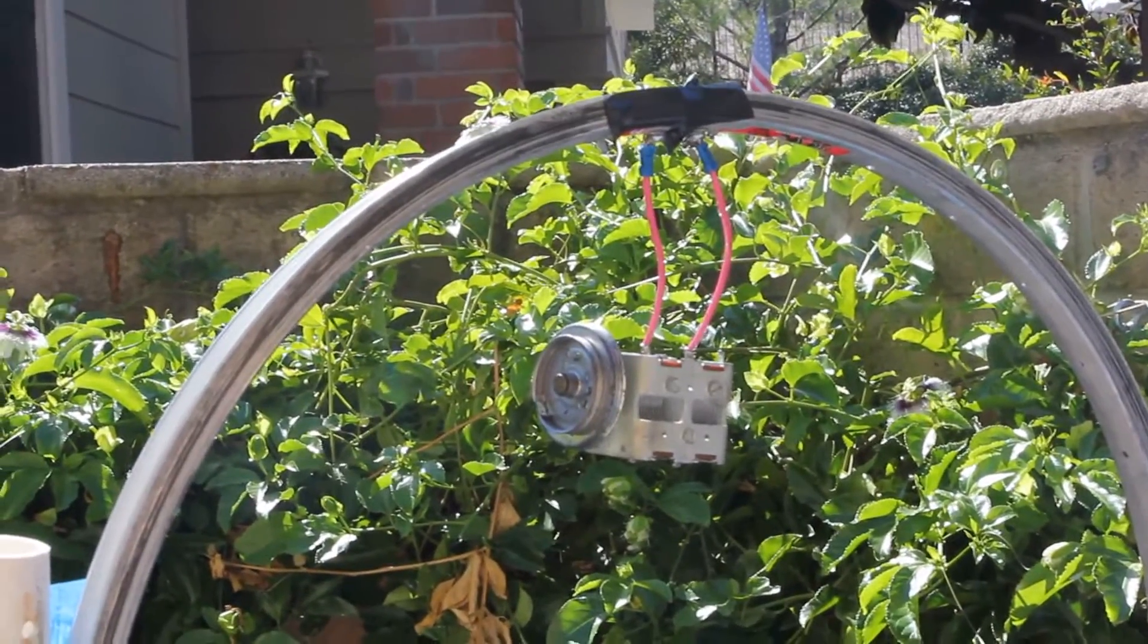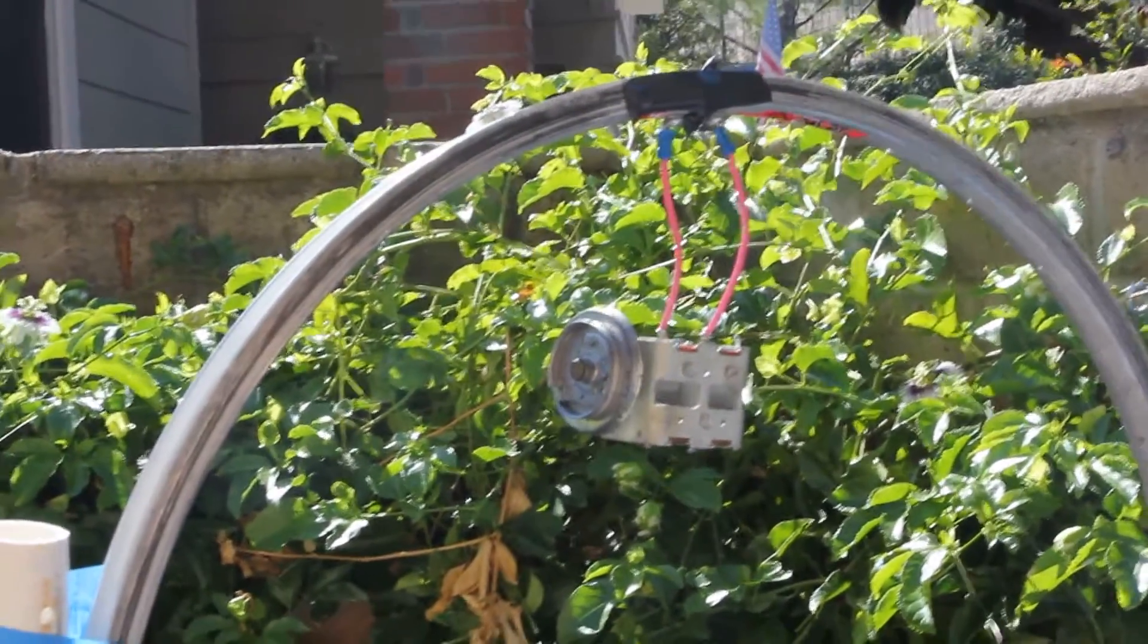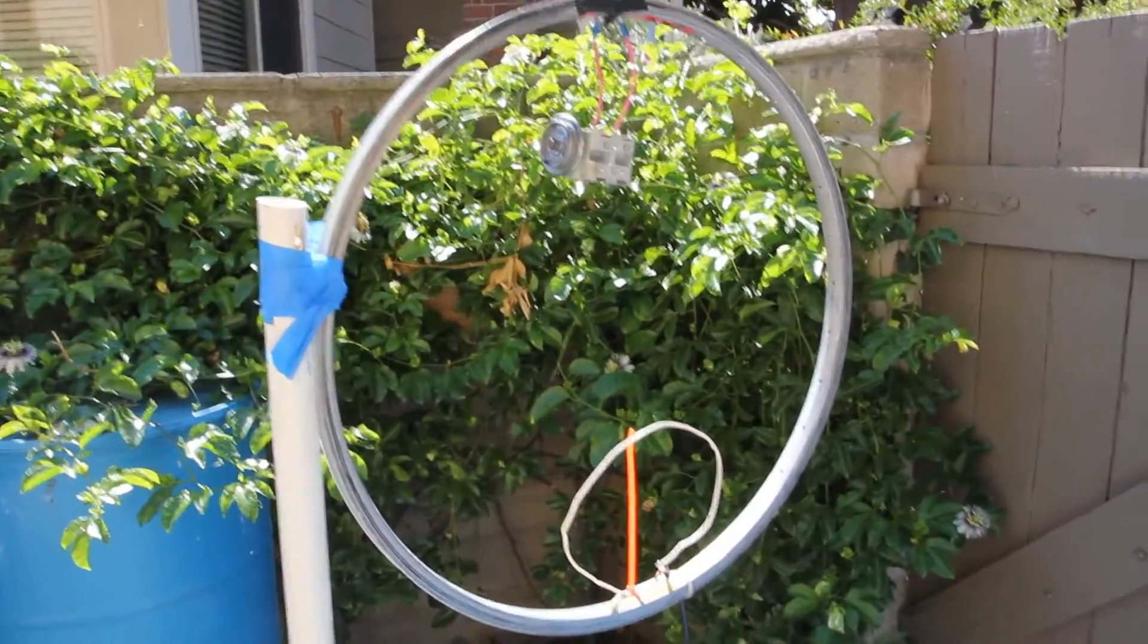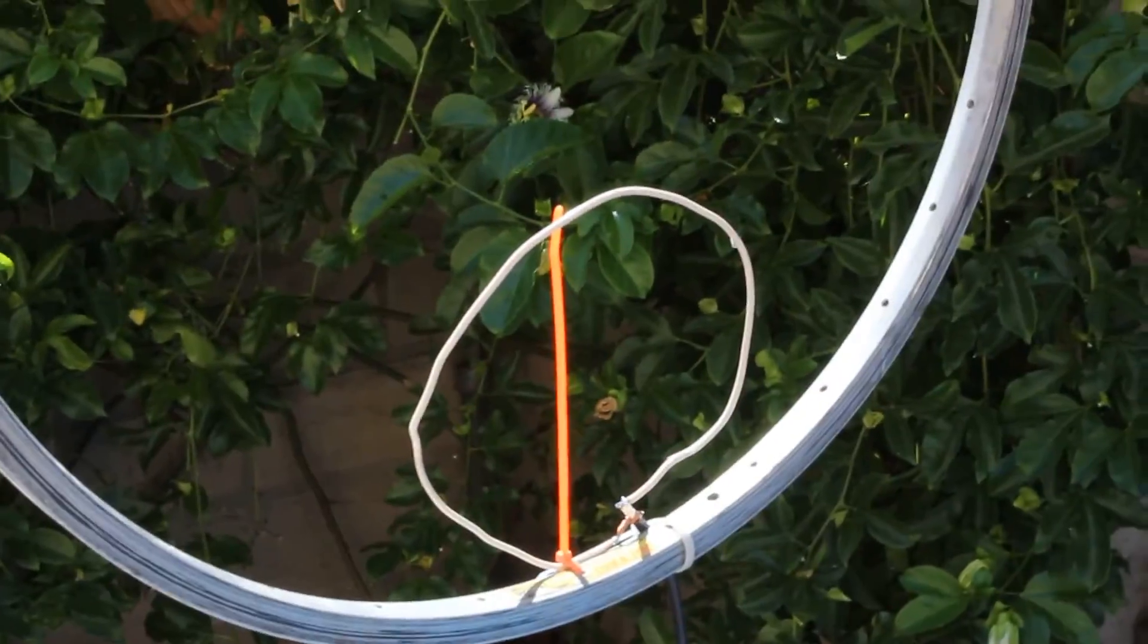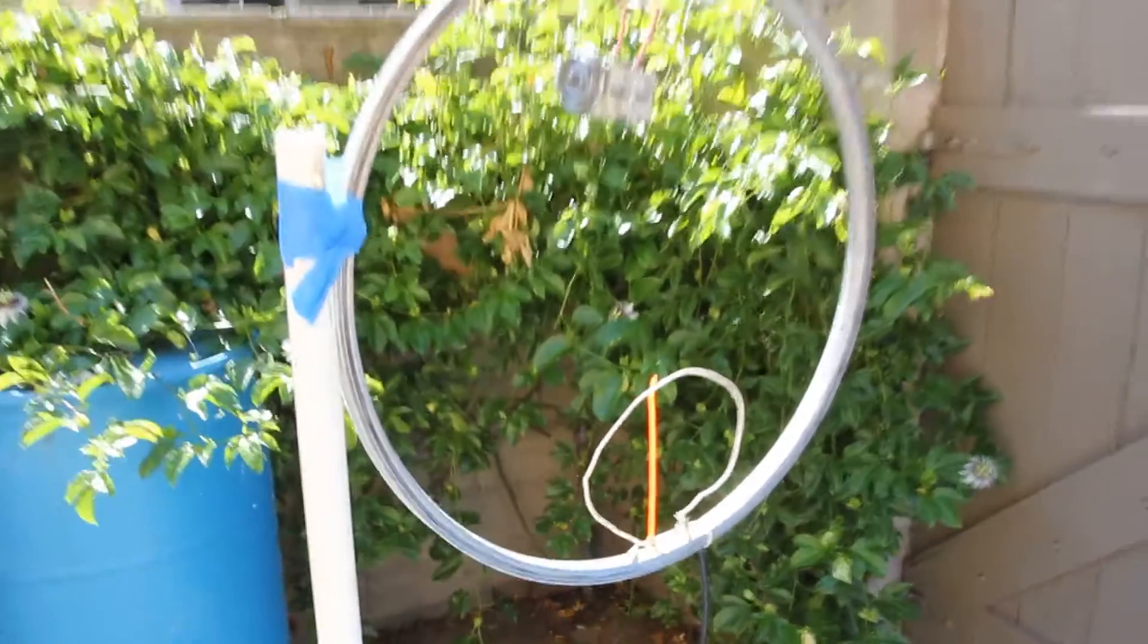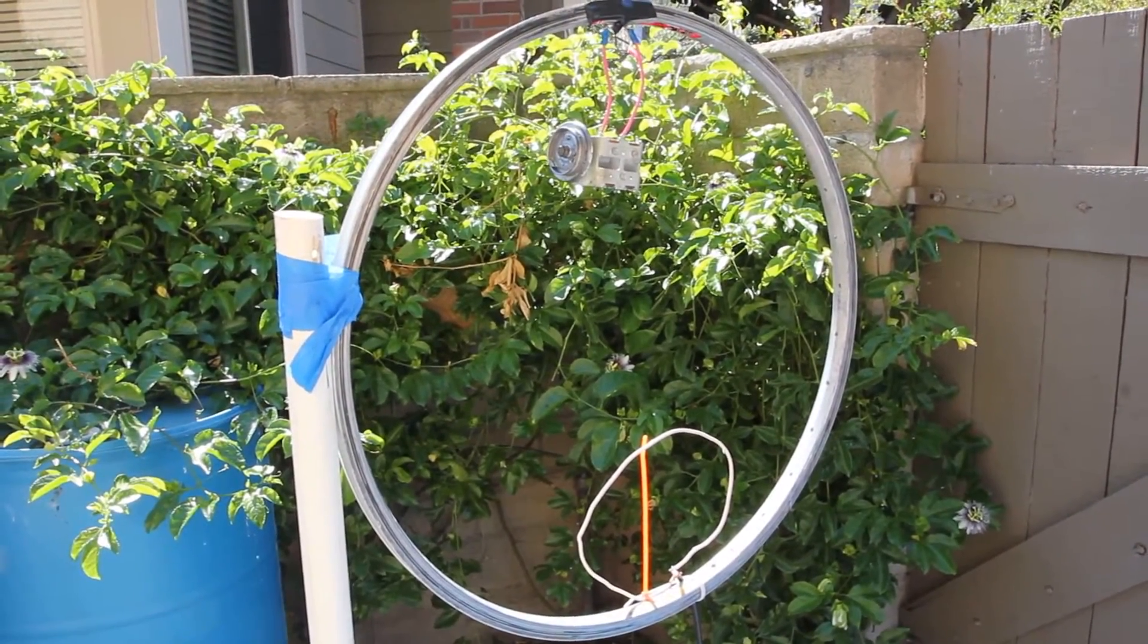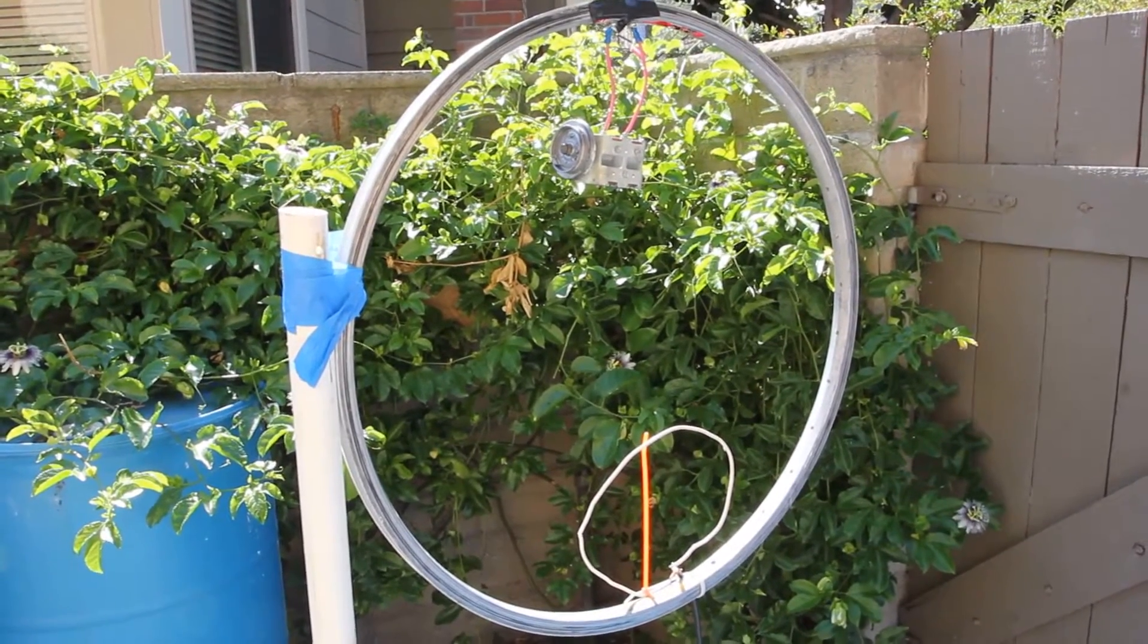Just beware you can't run much transmitting power through those. I haven't transmitted on this yet, this is just the receive test. That's the primary loop, which is connected to coax, which runs inside to my radio. And the bicycle wheel is just the actual antenna.